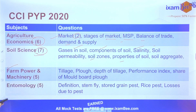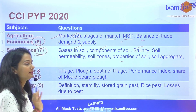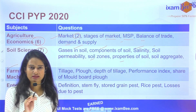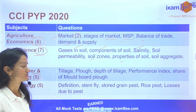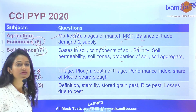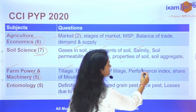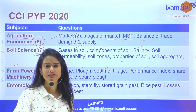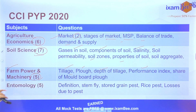Farm Power & Machinery se question tha. Bohot saare students ko yeh subject thoda hard lagta hai, lekin farm power aapko cover karna padega agar aapko CCI ka exam clear karna hai. 81 vacancies hai — thik amount hai vacancies ka, toh aap isliye apply kar sakte ho. Farm Power & Machinery mein 5 questions the: tillage se — primary, secondary tillage se related; depth of tillage se; performance index; aur different draft purposes ke liye jo bhi implements use kiye jaate hai, unse related; share related question bhi tha.